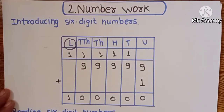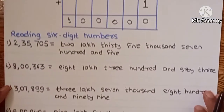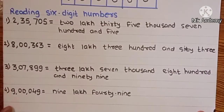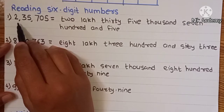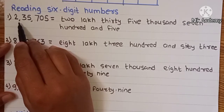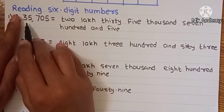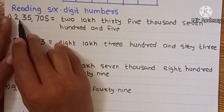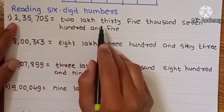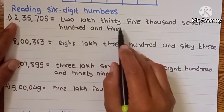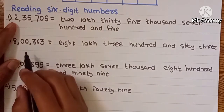Now, reading of 6-digit numbers — how to read a 6-digit number. Let's see the first example: 2,35,705. We now know how to read up to 5-digit numbers, and now we read 6-digit numbers. Here we can read 2,35,705.